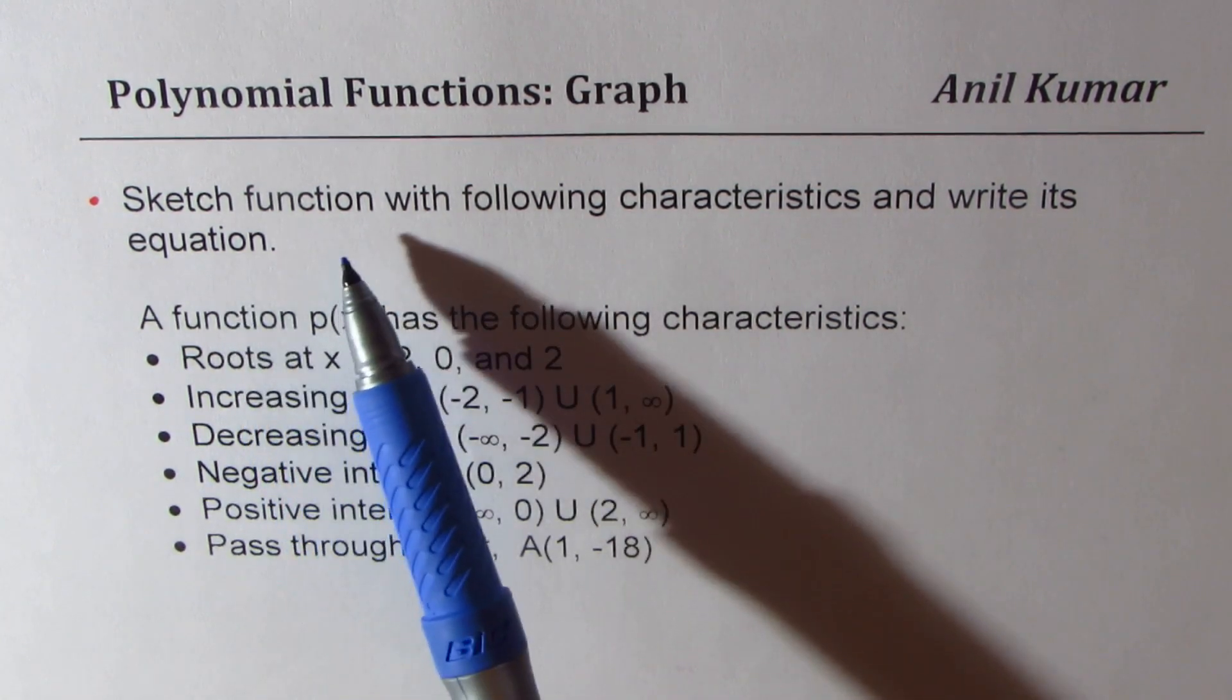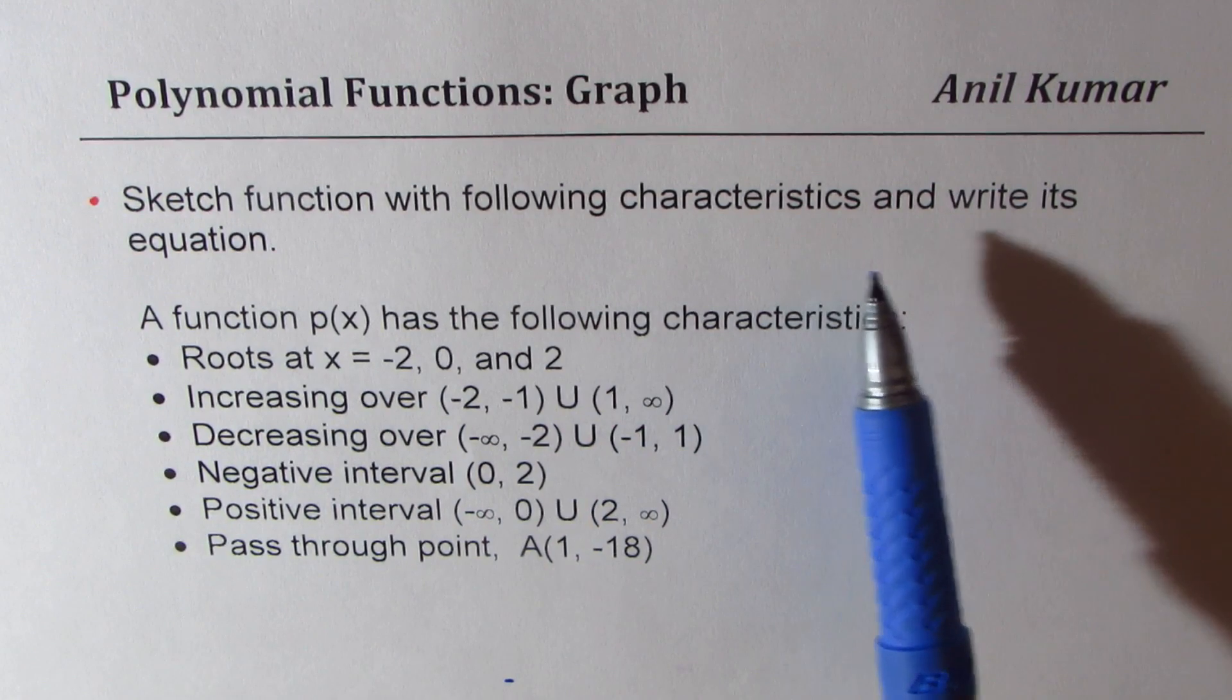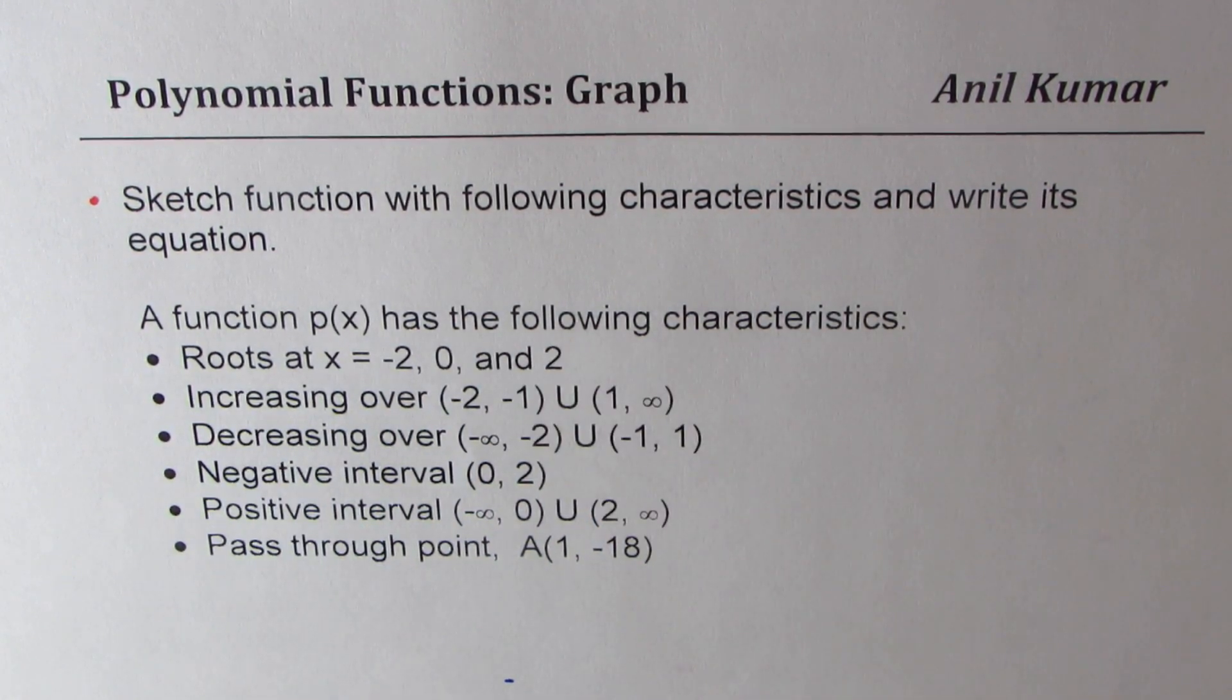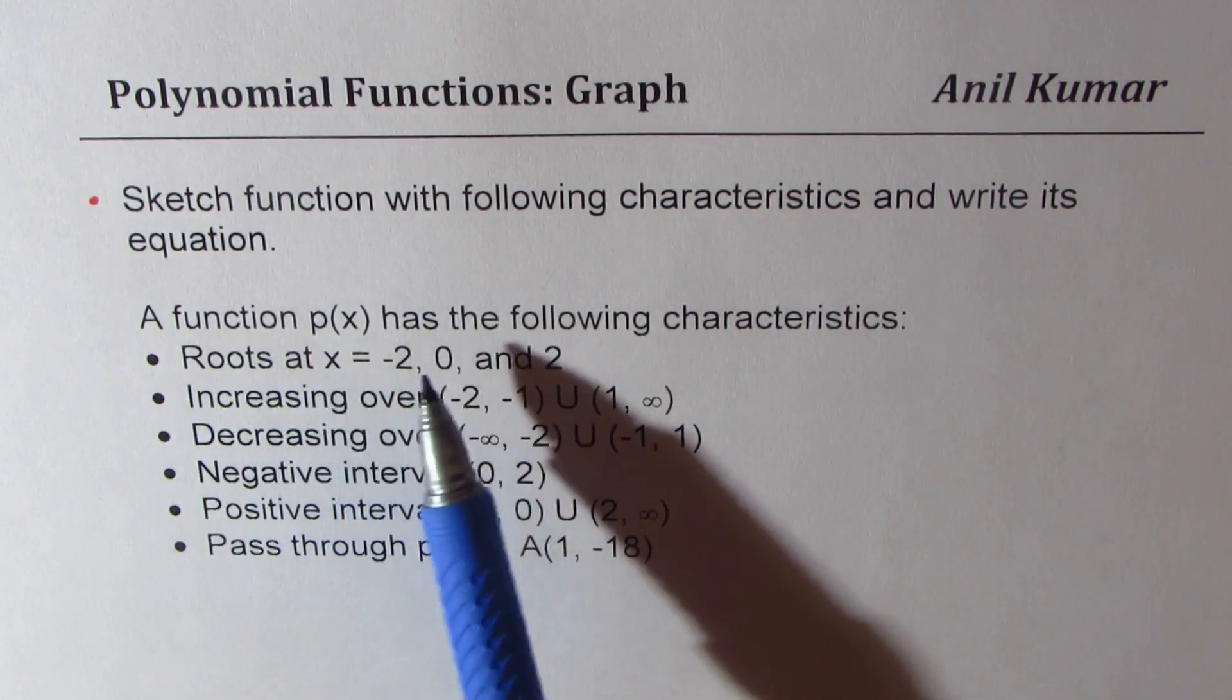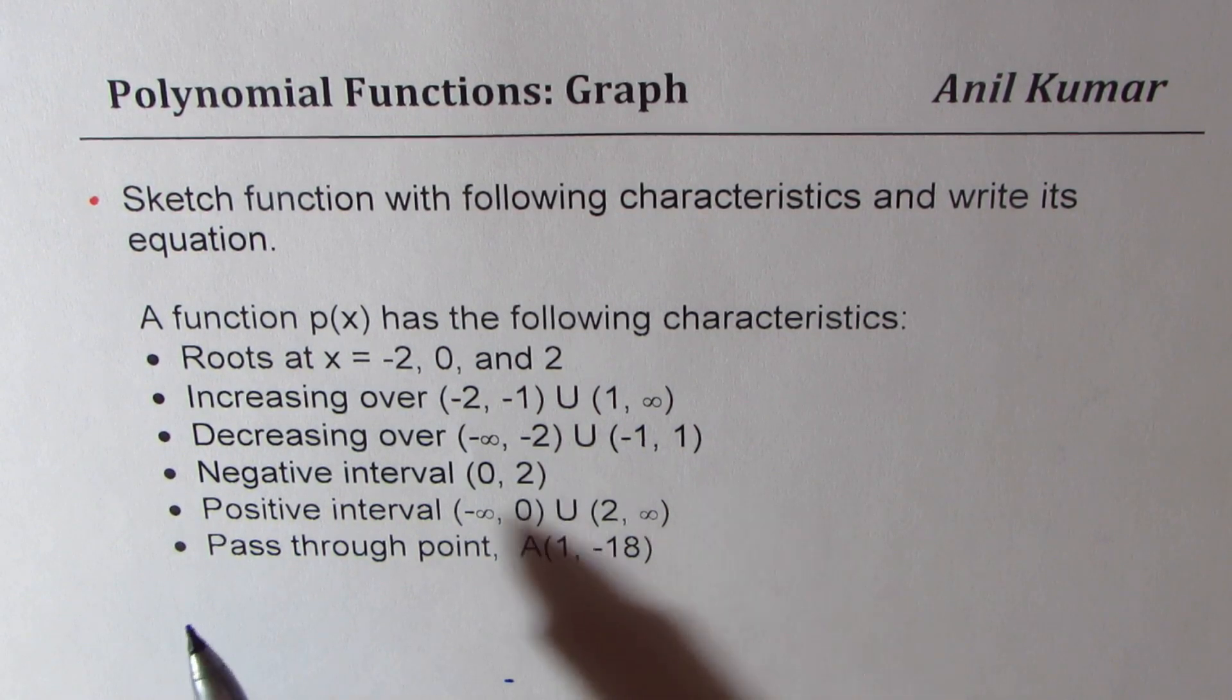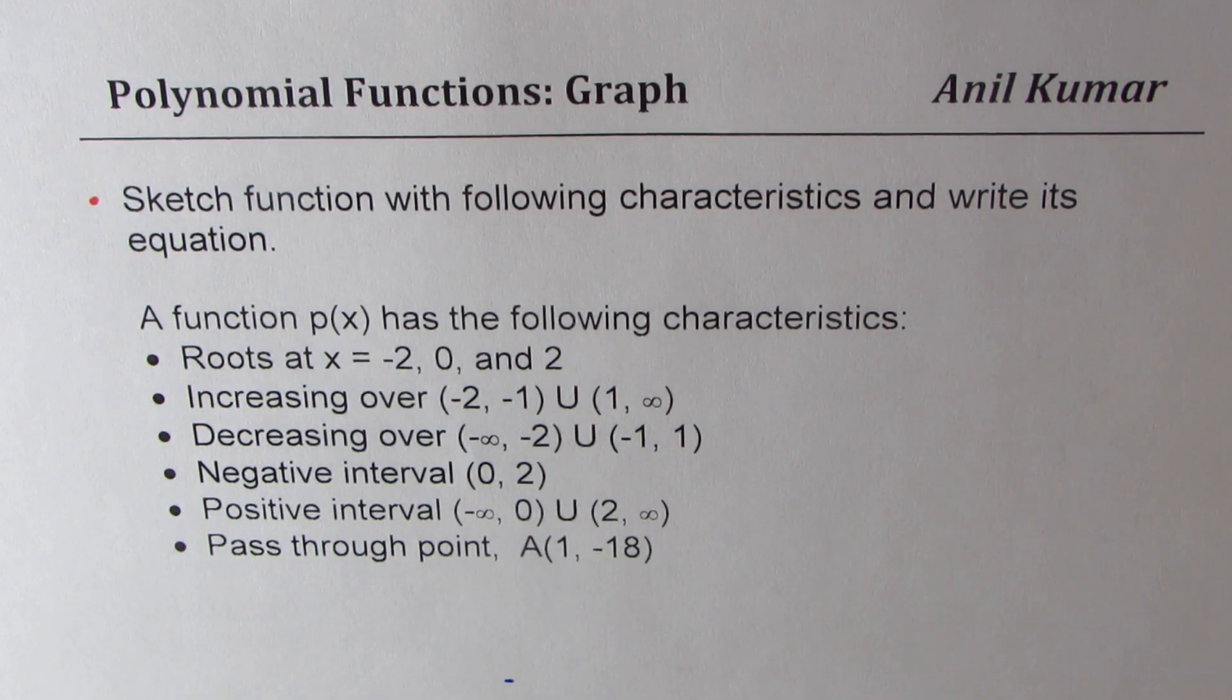The question is: sketch a function with the following characteristics and write its equation. A function p(x) has the following characteristics: roots at x equals minus 2, 0, and 2.